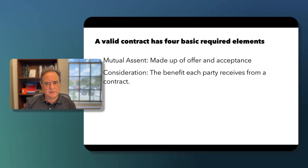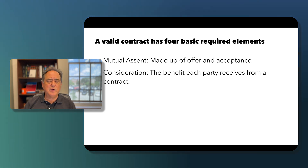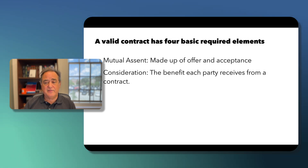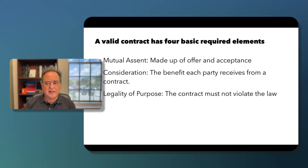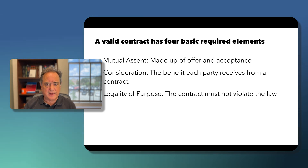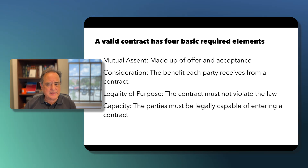The second element is consideration — the benefit that each party receives from a contract. If you agree to sell me your car for $5,000, I get the car and you get the money; that represents consideration. The third element is legality — the contract must not violate the law, so you cannot contract to burn a house down. Finally, capacity — the parties must be legally capable of entering into a contract.